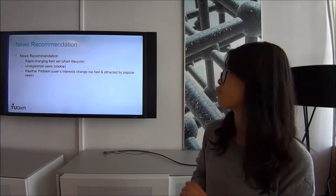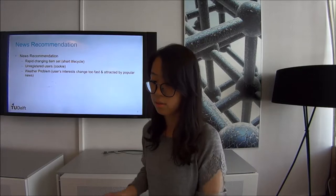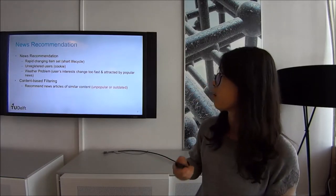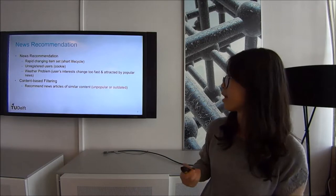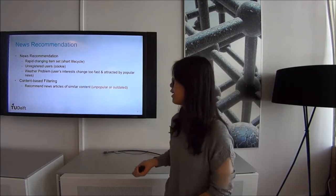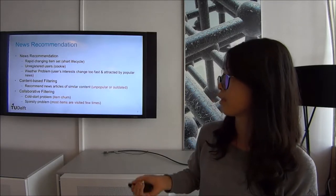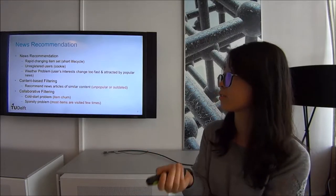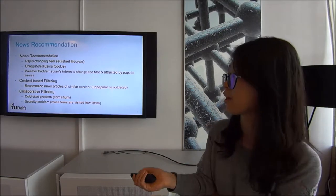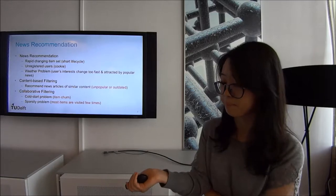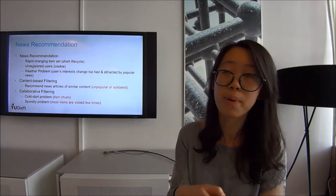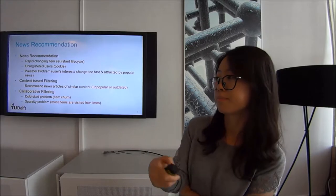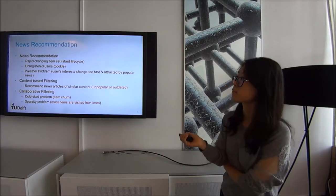There are also volatility problems — users' interests change quickly and they are easily attracted by popular news articles. Content-based filtering would continuously recommend news articles of similar content, but those articles may become unpopular or outdated. In collaborative filtering, there are continuous cold-start problems from the item side, and sparsity problems because users tend to interact mostly with popular articles.